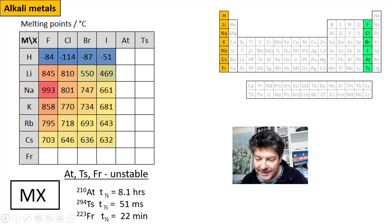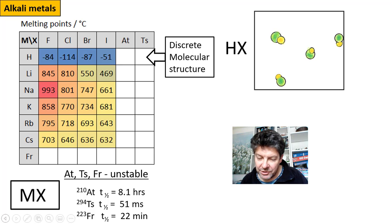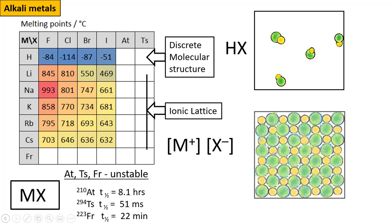And that's because, again, we have discrete molecular species where the interactions between different molecules is weak. Again, by contrast, all of these other compounds have high melting points. And that's because all of these compounds are salts. Ionic arrays are alternately charged elements. This is typical of the behavior of alkali metals. In almost all of their compounds, they exist as ions with a single positive charge.